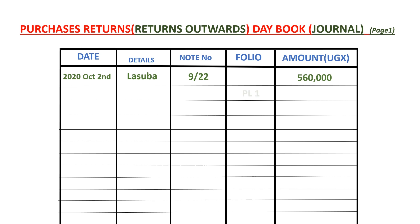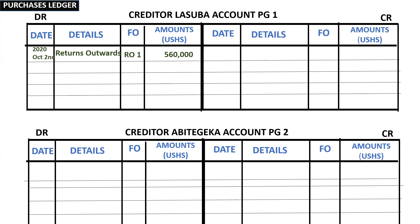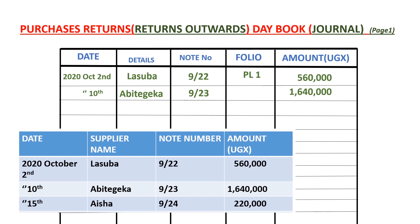The second transaction: on the 10th, supplier Abitgeka — we returned goods to him, note number 9/23, amount 1,640,000. We go to the purchases ledger, to creditor Abitgeka's account, and debit it by 1,640,000. The other item affected is returns outwards in the returns outwards day book on that date. Abitgeka's account is on page two, so we reference PL2 in the folio column of the returns outwards day book.